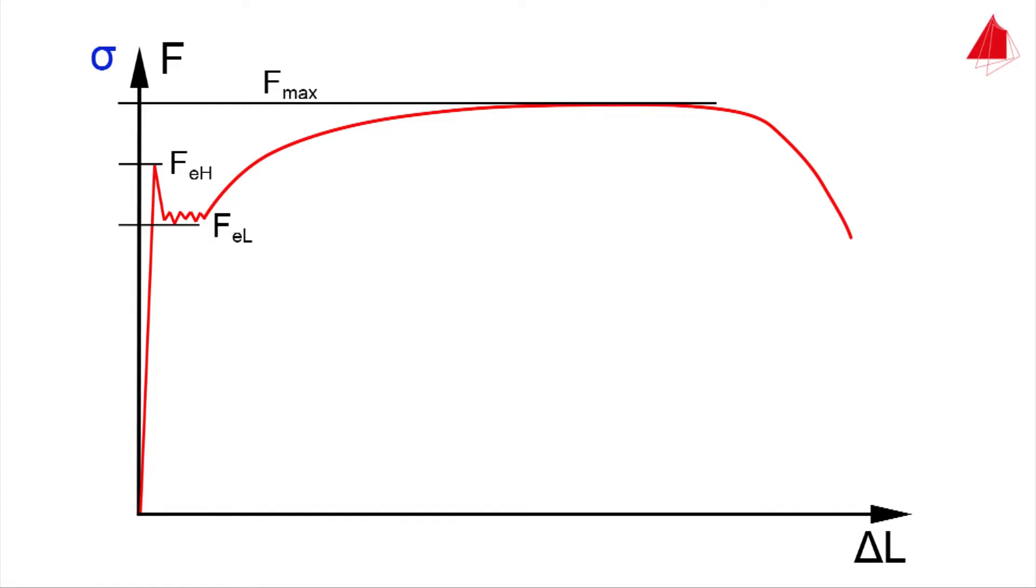The upper yield strength ReH is calculated by dividing the force FeH by the original cross-sectional area S0. The lower yield strength ReL is defined in a similar way. The maximum force divided by the original cross-sectional area is called tensile strength RM.